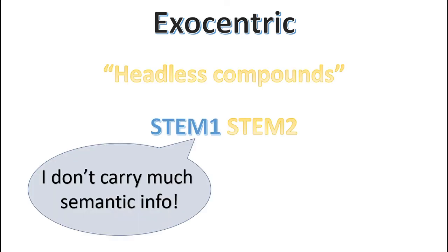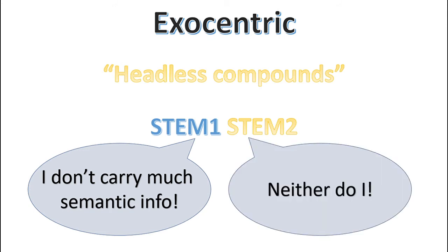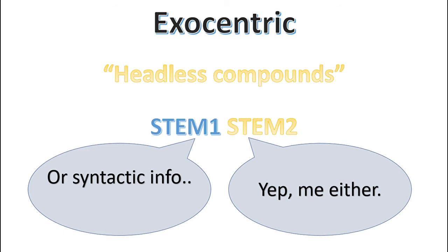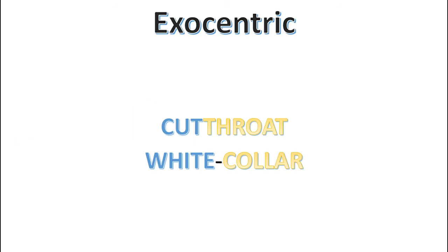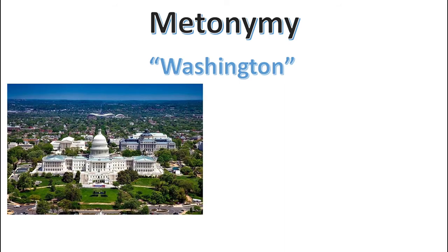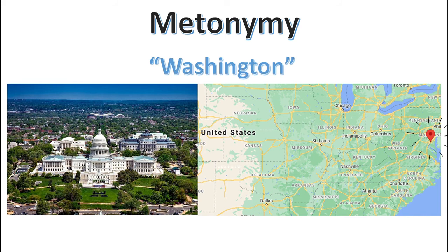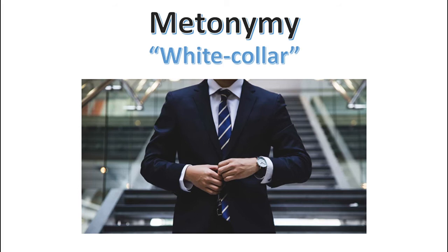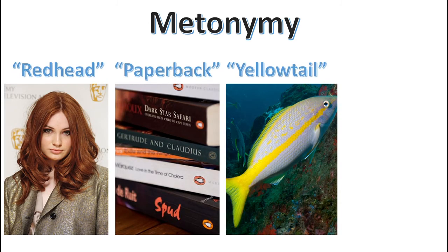Exocentric compounds, on the other hand, do not contain a head constituent, earning them the nickname 'headless compounds.' Neither constituent carries the bulk of the semantic information, nor does either constituent determine the syntactic category. Typical examples include cutthroat or white collar, which are both adjectives, yet the constituents in head position are nouns. In these cases, the compound constituents don't have a hyponymic relationship with the compound's meaning, but they sometimes have a metonymic relationship. Metonymy is when a particular aspect of something comes to refer to the whole — for example, Washington often refers to the US federal government. Similarly, white collar refers to the color of shirt collars traditionally worn by upper-class office workers. Other examples are redhead, paperback, yellowtail, or blackcap.